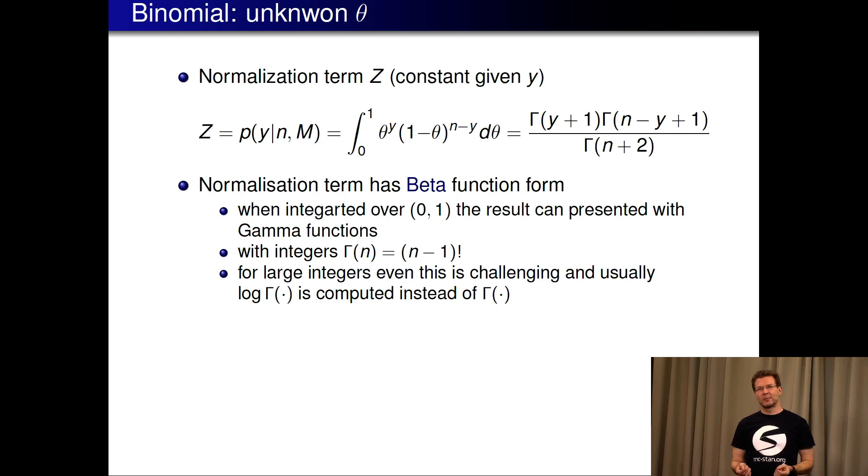In case of this binomial distribution it happens that we have analytic solution for this normalization term. It's known as a beta function form. When we integrate from zero to one it can be presented with gamma functions, which in case of integers happen to be same as factorial. And even then for the large integers this can be challenging to compute, but this we can do.